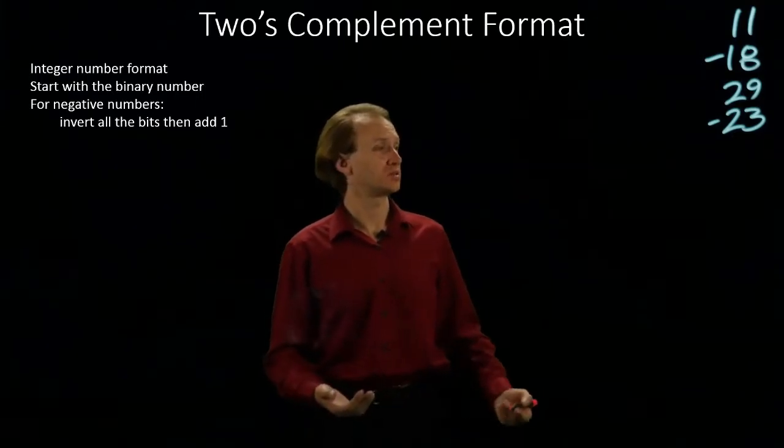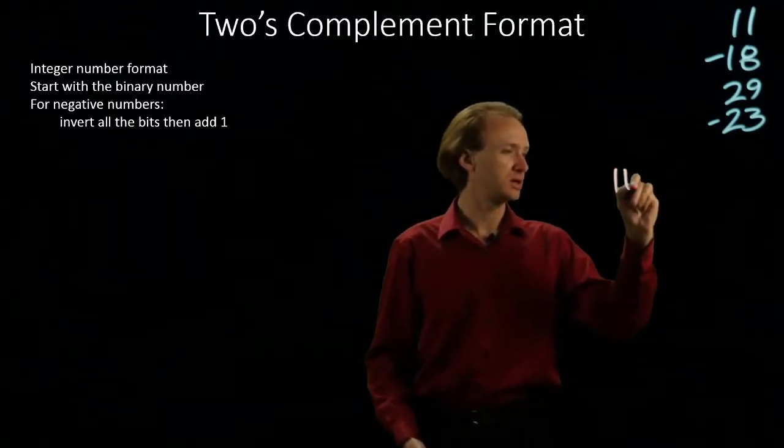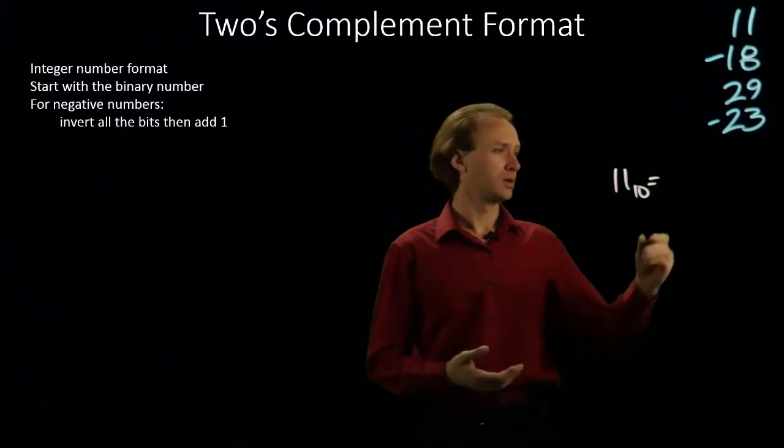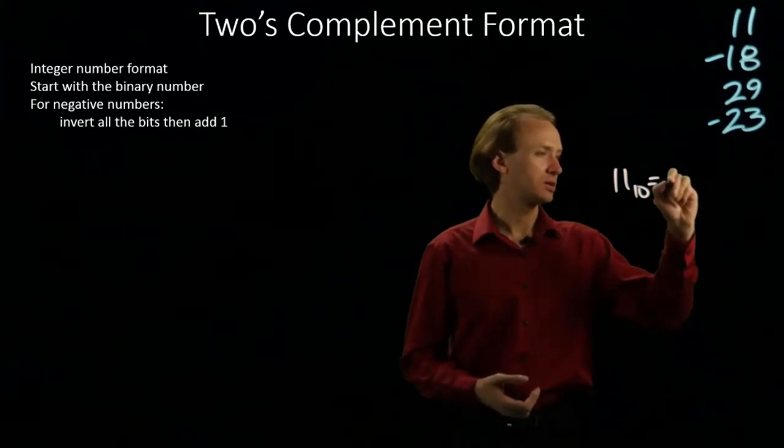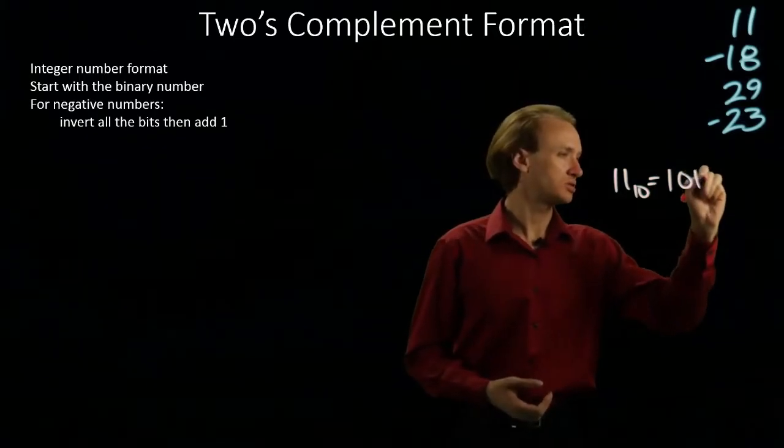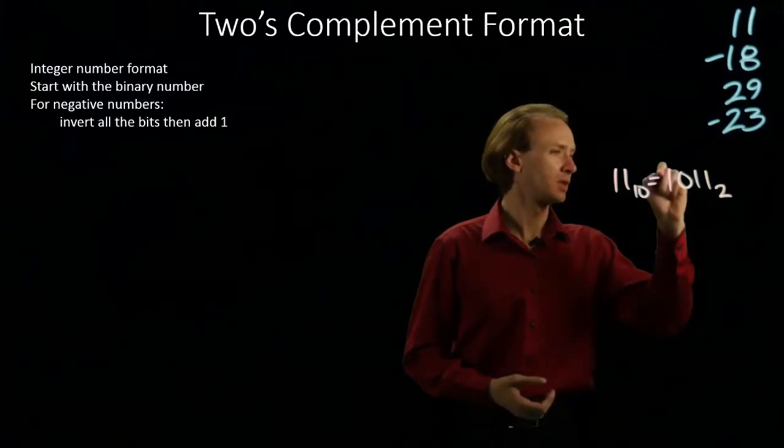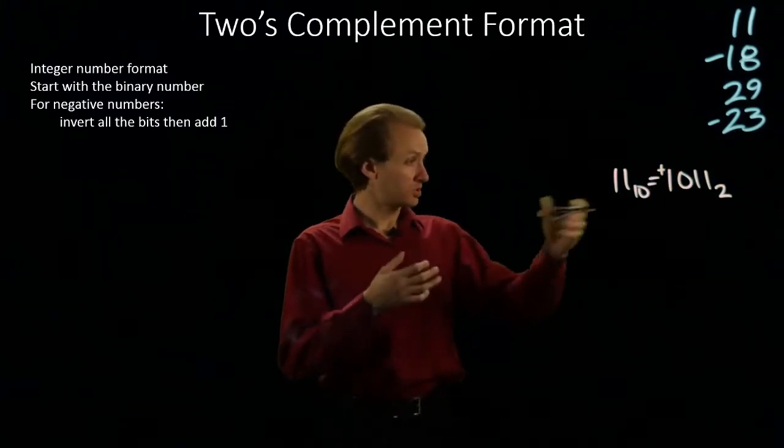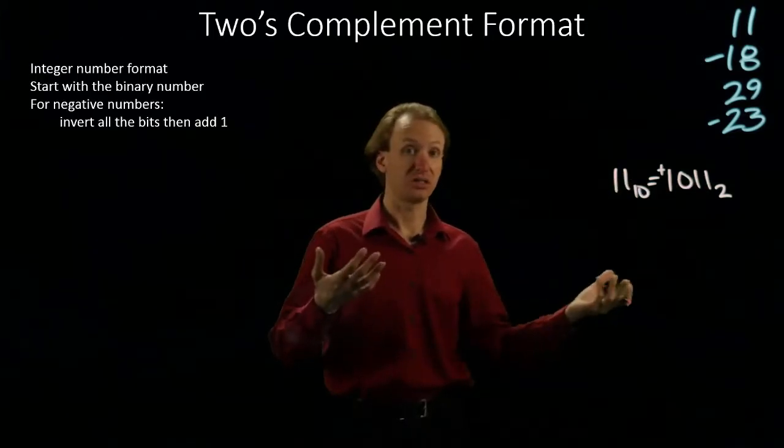My first number is 11 in decimal, so I want to convert that to binary. 11 in decimal is 8 plus 2 plus 1. This is a positive number, so I'm going to start by writing down my number in 16 bits.